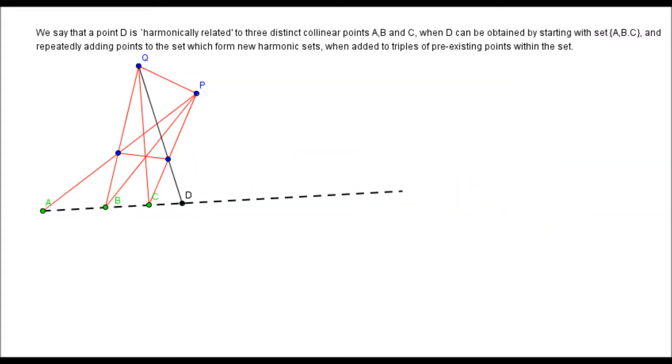Okay, so one really interesting idea which touches on ideas to do with the infinite and analysis is the notion of a harmonic net. So, basically, as I've already said, if we have three points on a line, three distinct points, A, B and C, then we can find a fourth point, D, which is going to end up making a harmonic set. So, A, B, C and D will be a harmonic set.